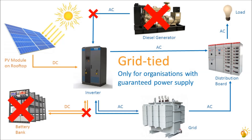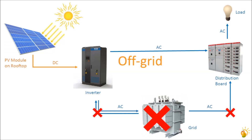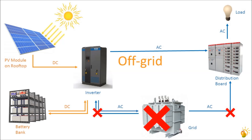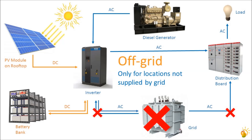Another type of solar plant is the off-grid solar plant that does not integrate with grid power. Instead, it only integrates with batteries or a diesel generator. Such a plant can be used in locations that are not connected to the grid at all. We do not recommend off-grid plants unless you are running very small loads, just a few lights and fans for instance.